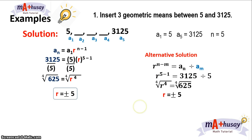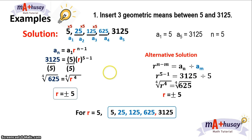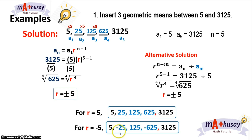The geometric means depend on whether r is positive 5 or negative 5. If r is 5, we multiply 5 to the first term to get 25, then 25 times 5 gives 125 as the third term, and 125 times 5 gives 625. So for r equals 5, the geometric means are 25, 125, and 625. For r equals negative 5, the geometric means are negative 25, 125, and negative 625.